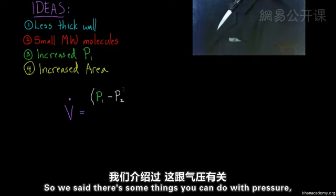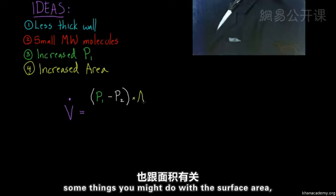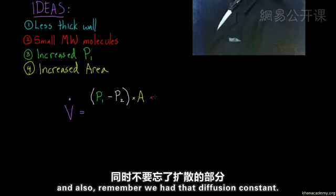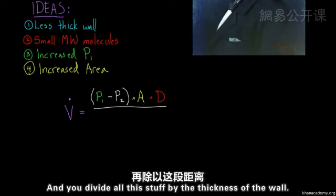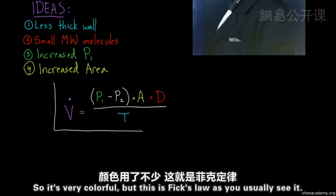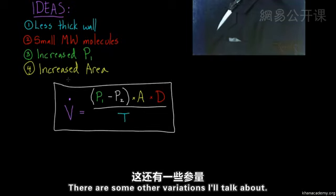This is actually how you most commonly will come across it, although there are some variations on it. And I'm actually going to try to color code it to go along with the ideas that we already presented. So we said there's some things you can do with pressure, some things you might do with the surface area. And also, remember, we have that diffusion constant. And you divide all this stuff by the thickness of the wall. So it's very colorful, but this is Fick's Law as you usually see it.